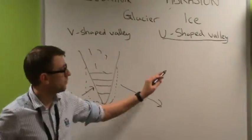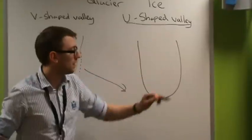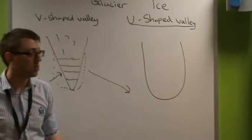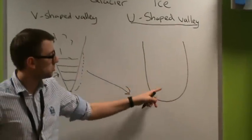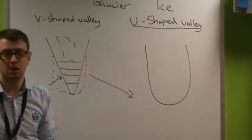So eventually, you get your U-shaped valley. When the snow melts, this U-shape will be left behind.